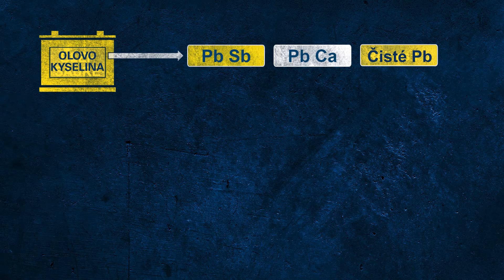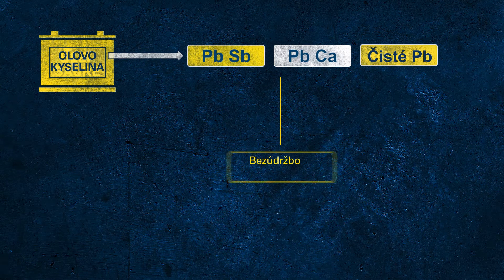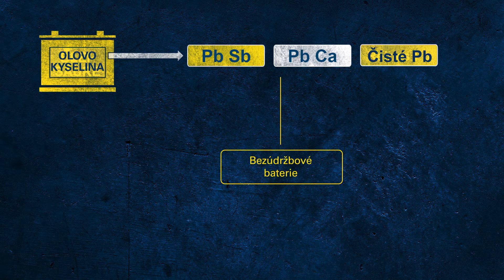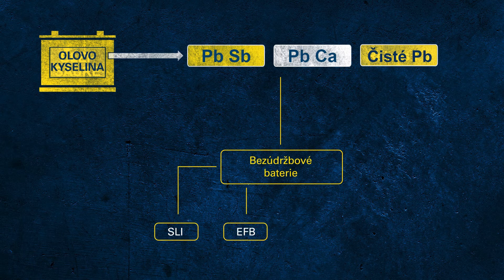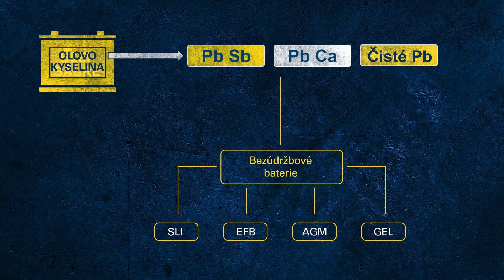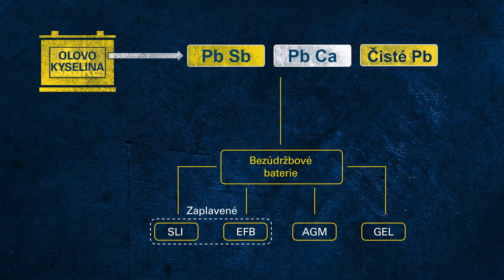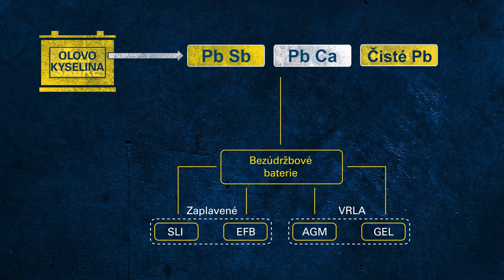Let's focus on the different battery types under the umbrella of maintenance-free batteries: SLI, EFB, AGM, and GEL. Those different battery technologies can be divided into two subgroups — flooded batteries with fluid electrolyte and so-called VRLA batteries with fixed electrolyte and valves inside. VRLA stands for valve regulated lead acid. Let's shed some light on the abbreviations used here.